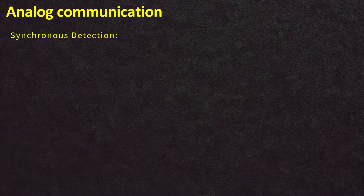In this lecture of analog communication, we will understand what synchronous detection or demodulation is for the amplitude modulated signal. The simplest form of detection for an amplitude modulated signal is done by using a simple diode rectifier. But in order to achieve improved performance, a form of detection known as synchronous demodulation or detection can be used.